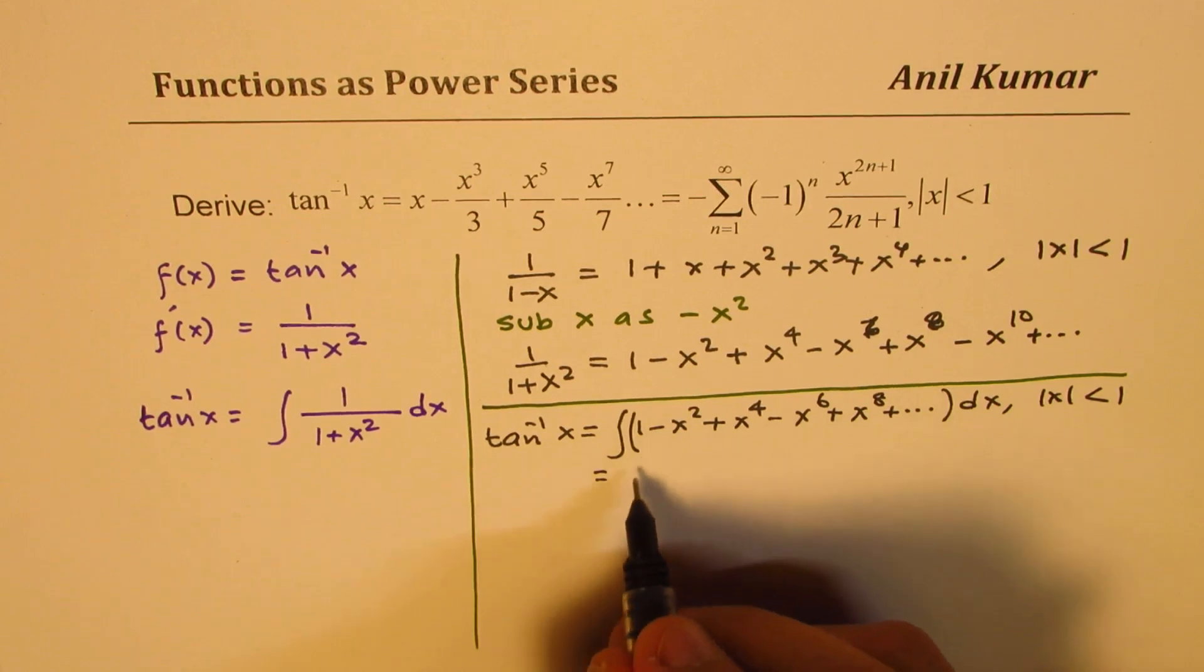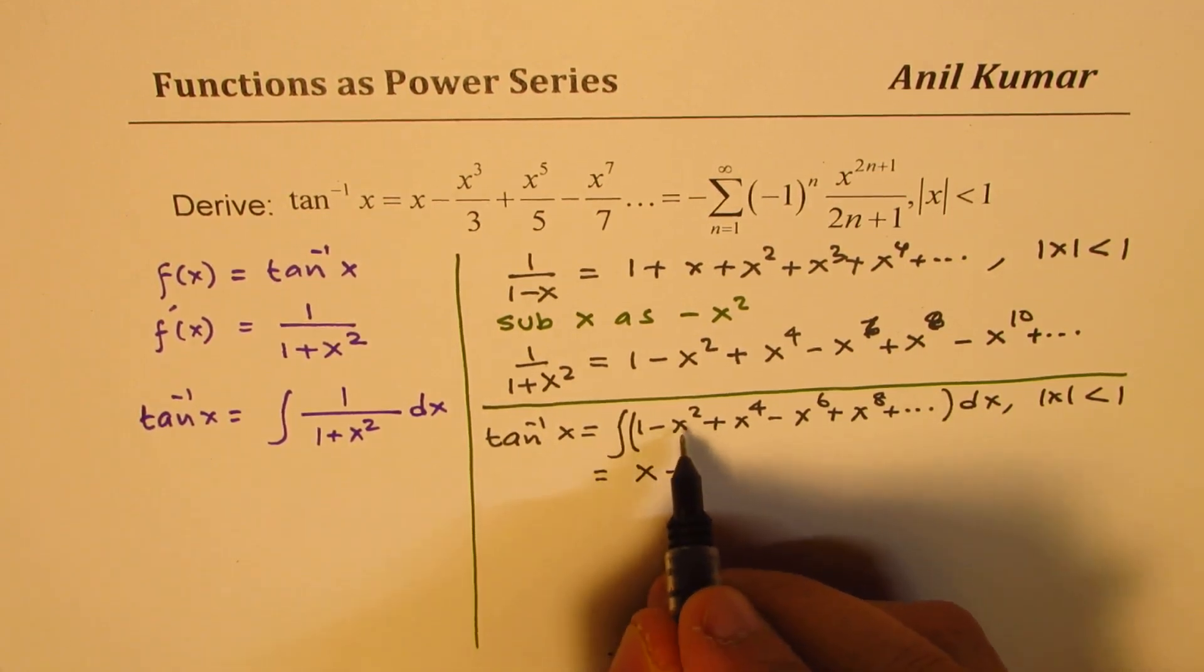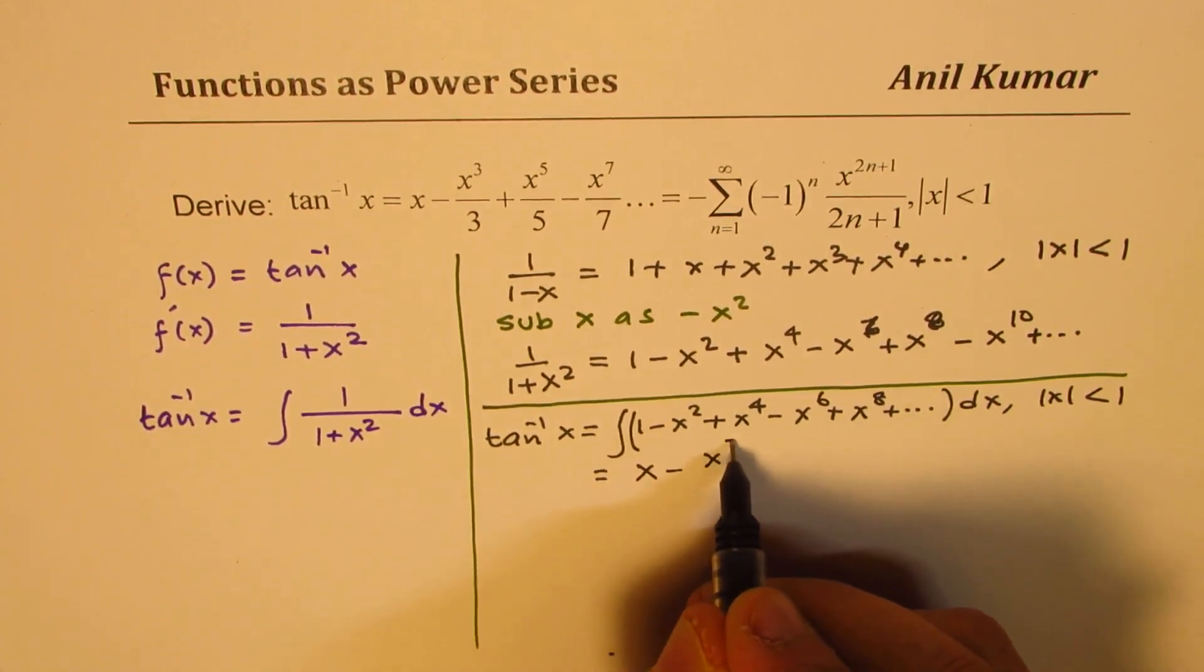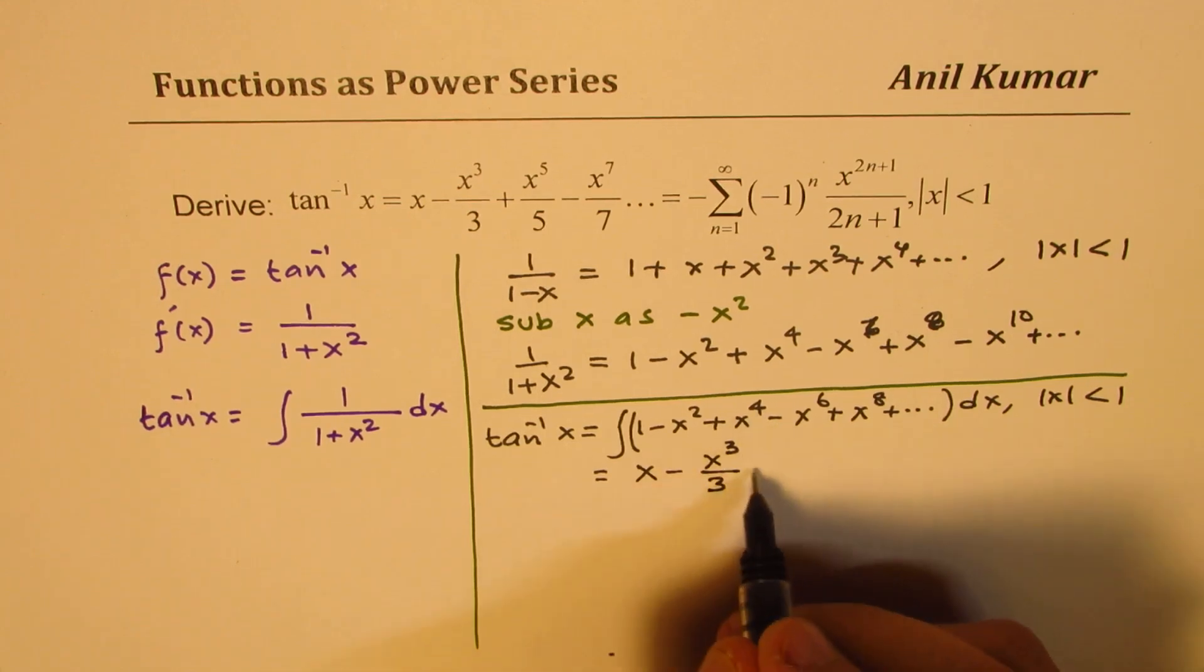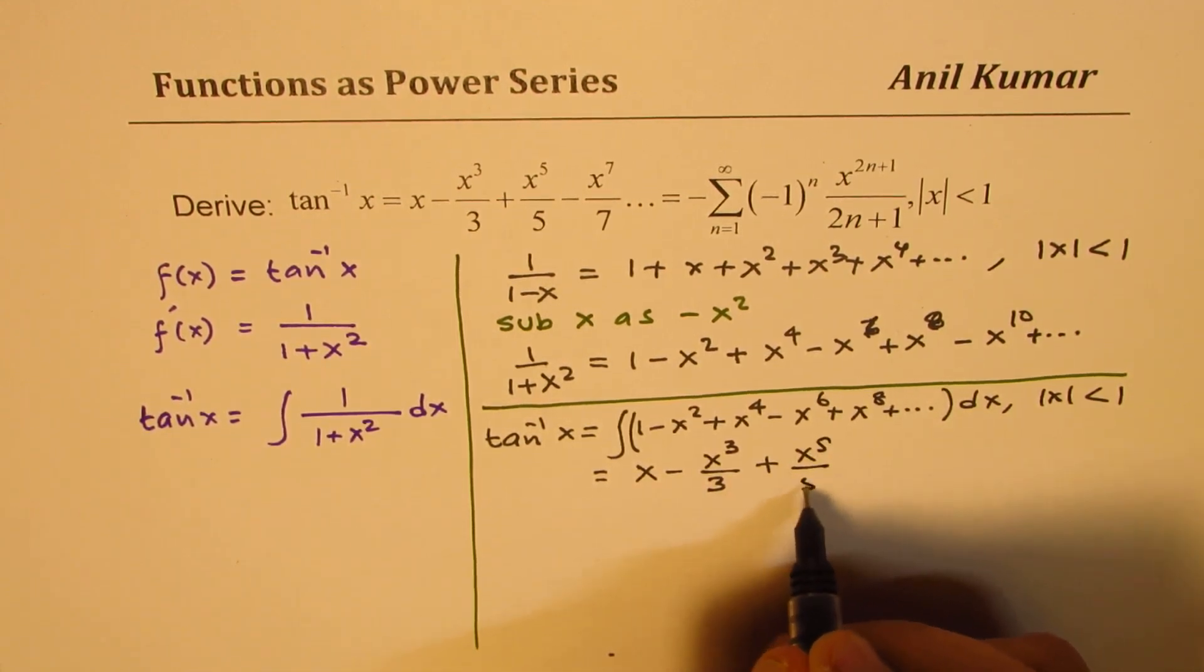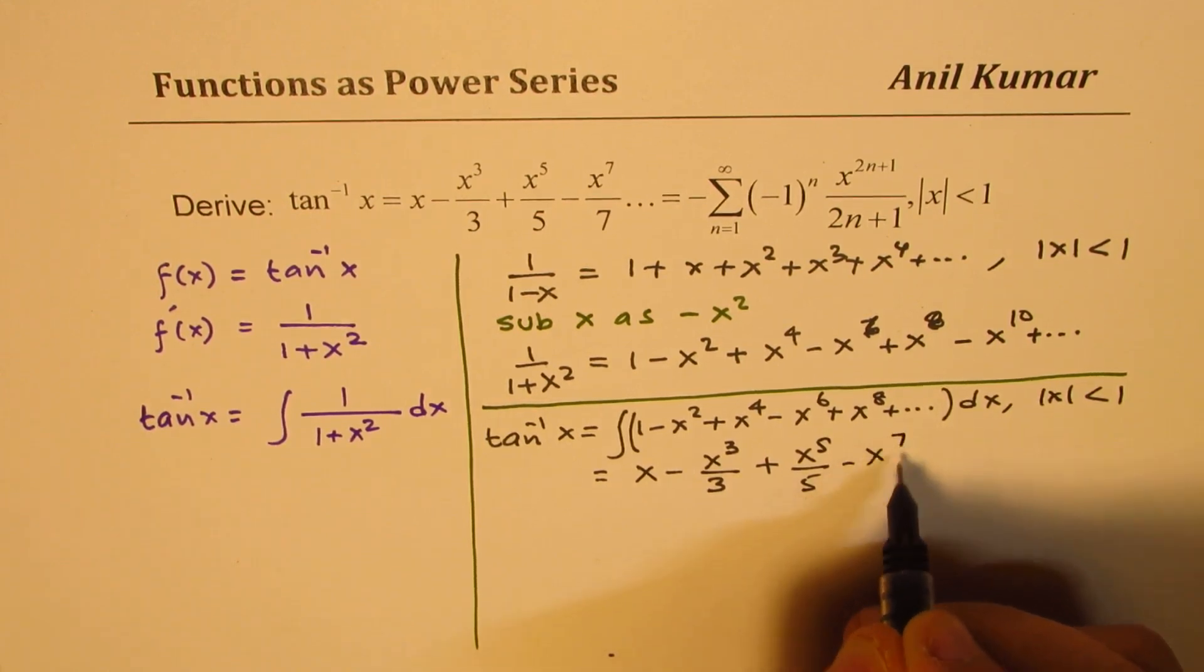And as you can apply the power rule to integrate this series, you get x minus, this becomes plus three over three, and that becomes plus x to the power of five over five minus x to the power of seven over seven plus so on with a constant c.